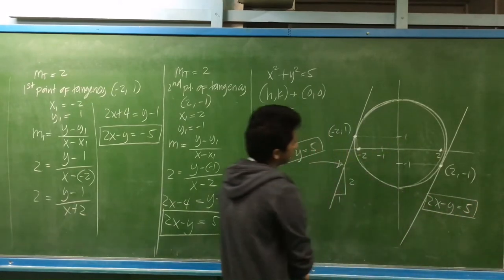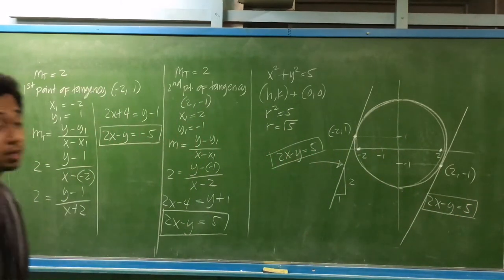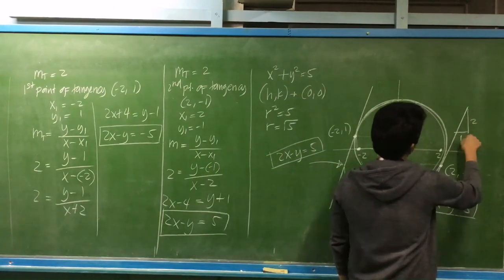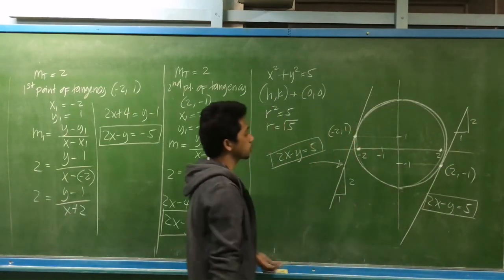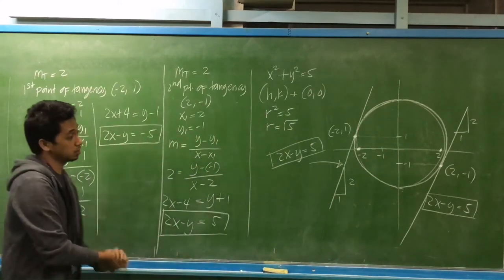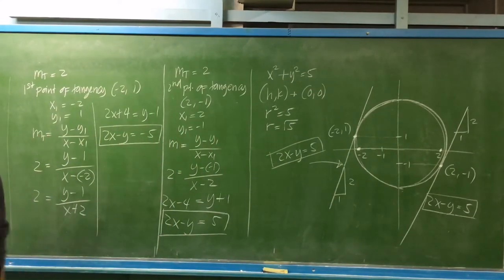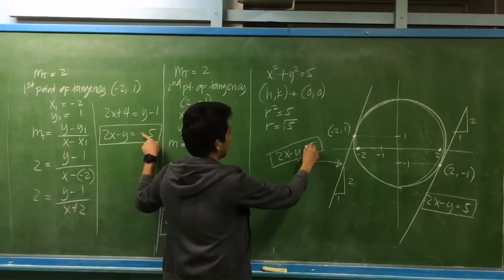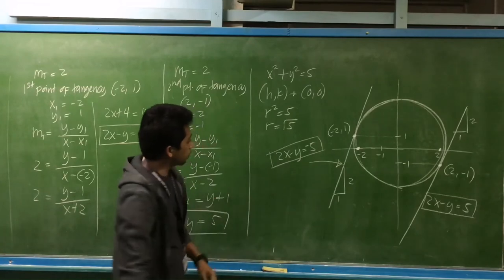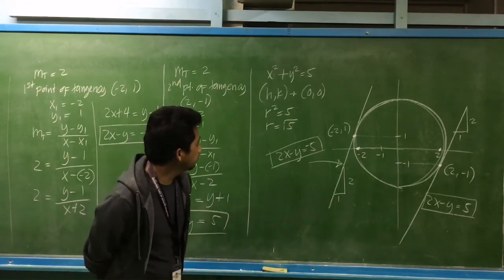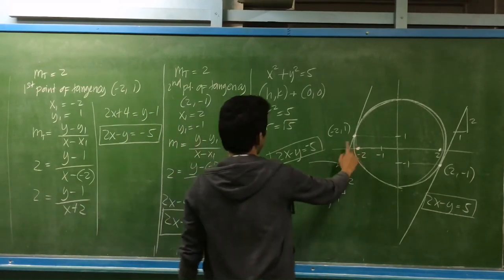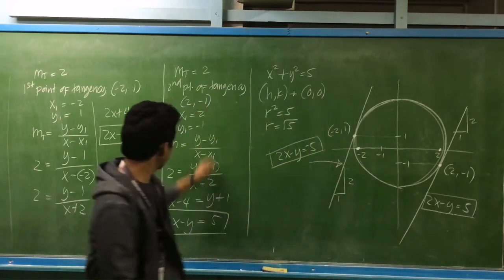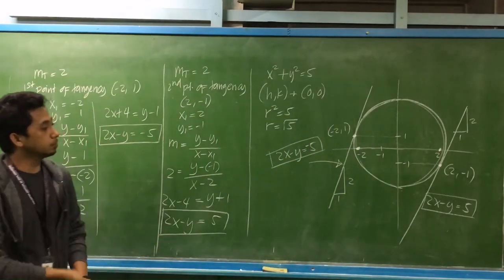These are the two tangent lines having a slope of 2. To summarize: the first tangent at point negative 2, 1 has equation 2x minus y equals negative 5, and the second tangent at point 2, negative 1 has equation 2x minus y equals 5.